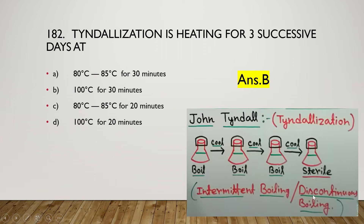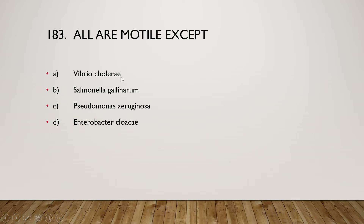Tyndallization is also called intermittent or discontinuous boiling. The nutrient media is first boiled at 100°C for 30 minutes, then cooled and incubated. After incubation, any endospores present will germinate. The next day, the solution is boiled again, then cooled and incubated. Any remaining endospores can also be killed by this subsequent boiling. Over three successive days, this heating process completely sterilizes the media.